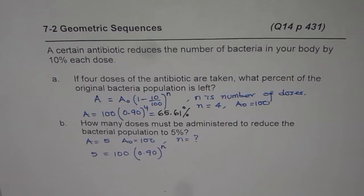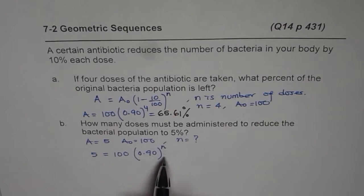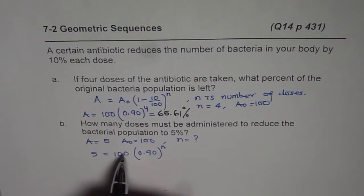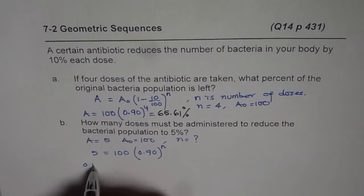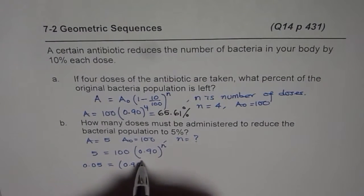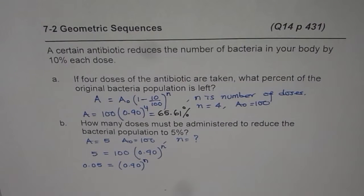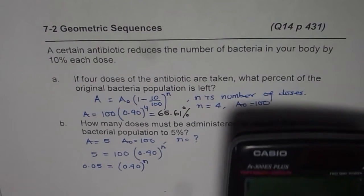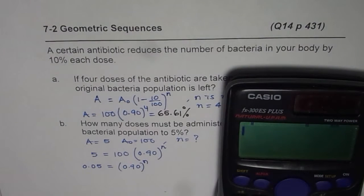Now to do such questions, there are a couple of methods. One is to take log on both sides. Let me first divide 5 by 100, so we get 5 over 100 as 0.05 equals 0.90 to the power of n. You can adopt two methods at this time. One is trial and error, which means you have to do 0.9 to the power of some number, let us say 10, and check your value.